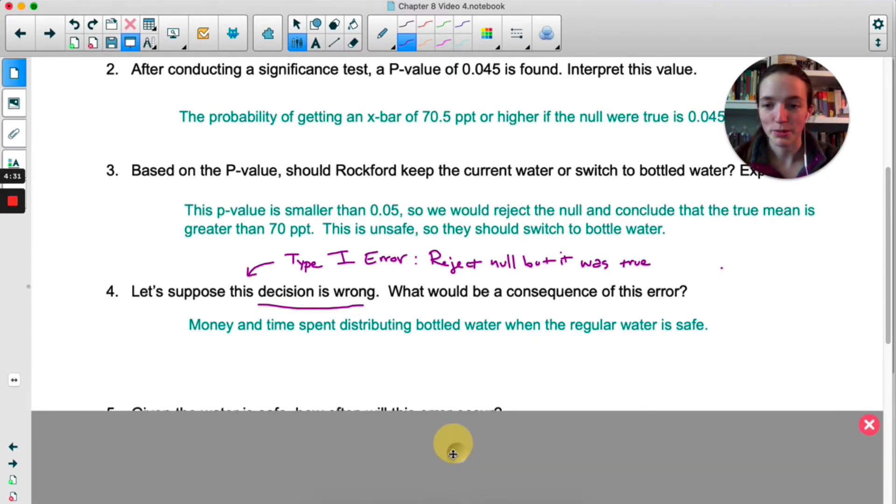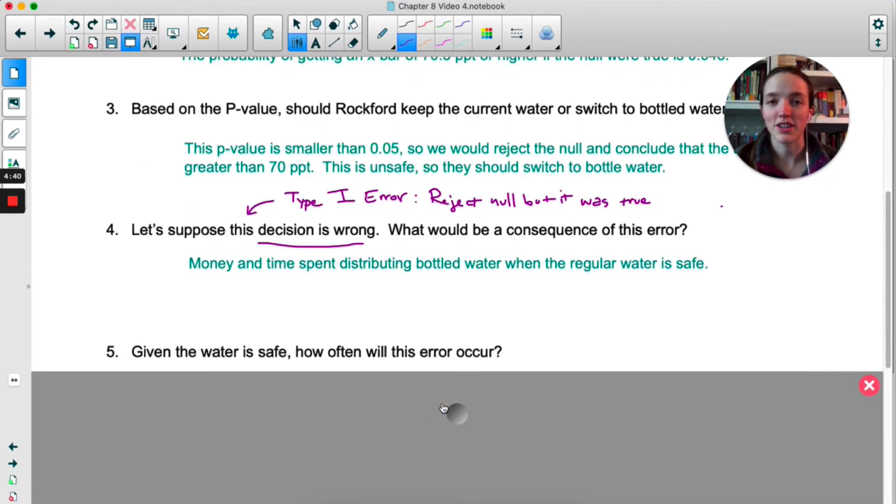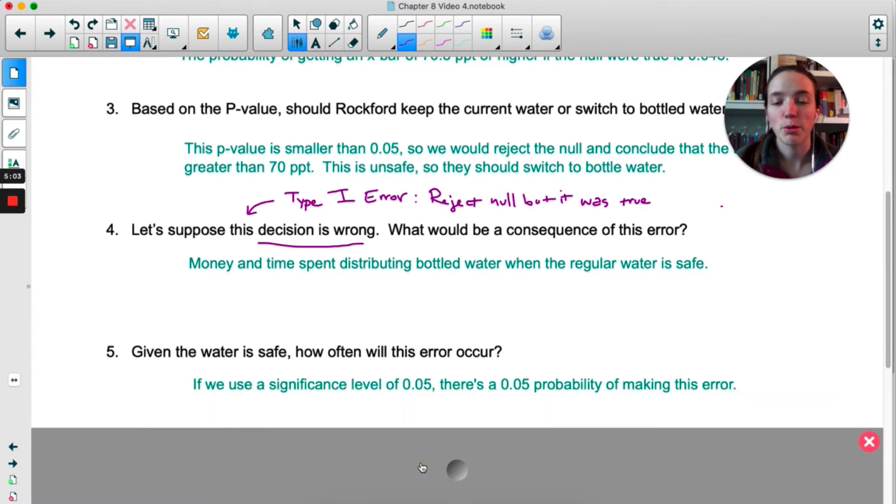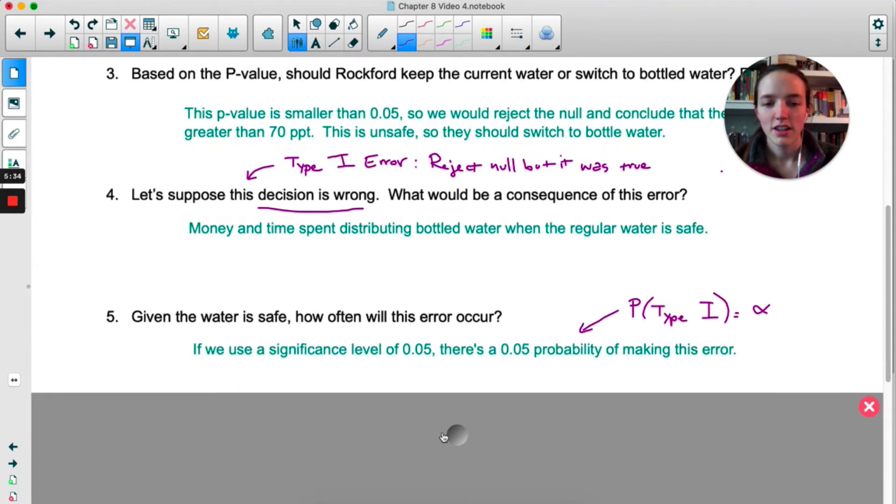Given the water is safe, how often will this error occur? If we set our significance level at 0.05, we've kind of set this threshold. The area to the right of that significance level is 0.05. If we get any x-bar in that little area we're going to reject the null and make this Type 1 error. So the probability of making that error is 0.05. Now in general, the probability of a Type 1 error is whatever your significance level is: 0.05, 0.1, whatever it is. Because the significance level is basically saying this is my cutoff, this is where I'm going to reject. And a Type 1 error is rejecting but you shouldn't have rejected.